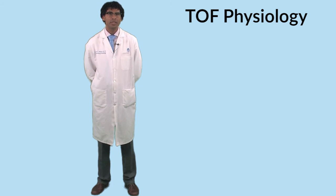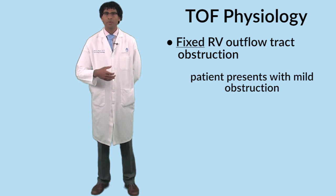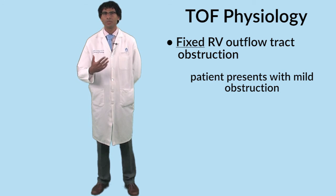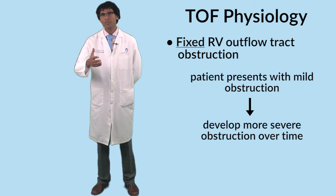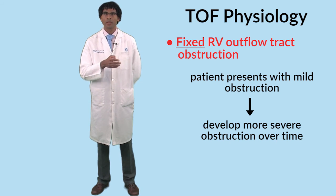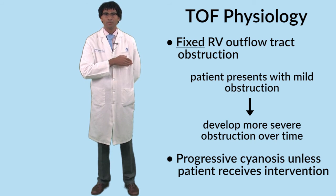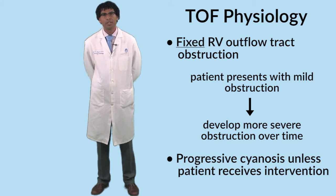One of the interesting things about tetralogy physiology is that because the right ventricular outflow tract obstruction is fixed, patients that start out with milder degrees of obstruction will tend to develop more and more severe obstruction as they get bigger — because as the rest of the heart grows, that portion of the heart does not. So whatever the cyanosis is when the patient is first born will typically be progressive unless there is an intervention.